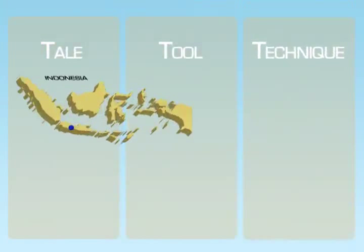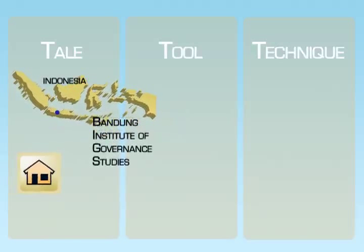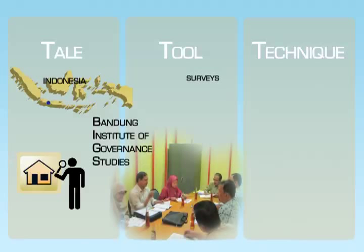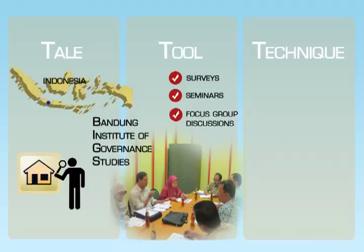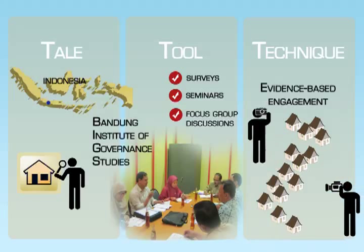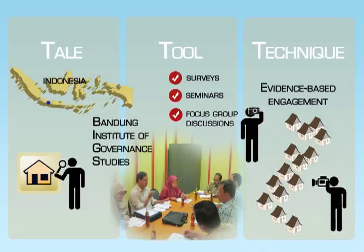In assessing government performance in the housing sector, the Indonesia-based Bandung Institute of Governance Studies measured the effectiveness of the local government's budget and housing policy to address Bandung's urban poor problem. BIGS conducted surveys, seminars, and focus group discussions to measure the effectiveness of their government's housing plans. Taking on an evidence-based engagement with government, BIGS also documented the conditions of urban slum areas through photos and videos.